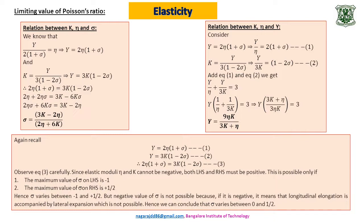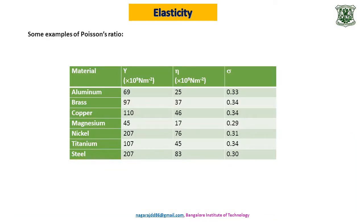Well in the previous slide we saw some derivations and also we came to a conclusion that the limiting value of Poisson's ratio cannot exceed half and also it cannot be negative. In this table I have given some examples along with Young's modulus, rigidity modulus and Poisson's ratio values: Aluminium, Brass, Copper, Magnesium, Nickel, Titanium, Steel. Please look at the sigma value. It is well within 0.5 and of course there is no negative value. So Poisson's ratio cannot be negative either for a metal or for an alloy. Dear students, I request you to calculate bulk modulus using Y and eta values for different elements given here. You can make use of the relations which we derived just now.